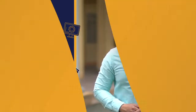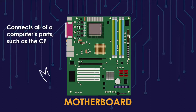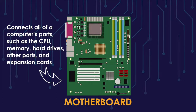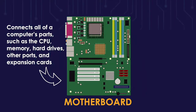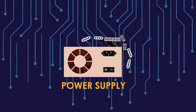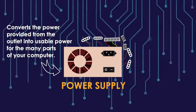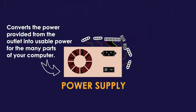A motherboard is the main circuit board and one of the most essential parts of a computer system. The motherboard connects all of the computer's parts such as the central processing unit, memory, hard drives, and other ports and expansion cards connected to the motherboard directly or via cables. And because it holds all the pieces together, we can also call the motherboard the backbone of the computer system. Since the computer is an electronic device, electricity is needed for it to work, and that's when the power supply unit comes in. Found on the back of the system unit, the power supply unit is the piece of hardware that converts the power provided from the outlet into usable power for the many parts of your computer.